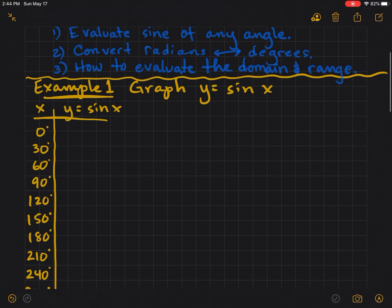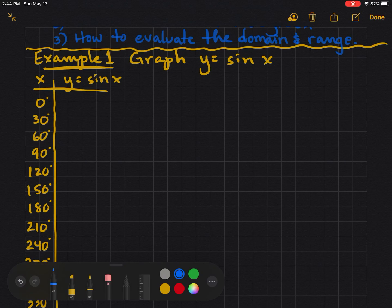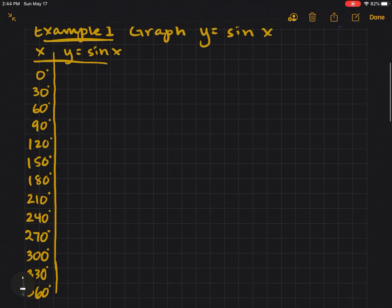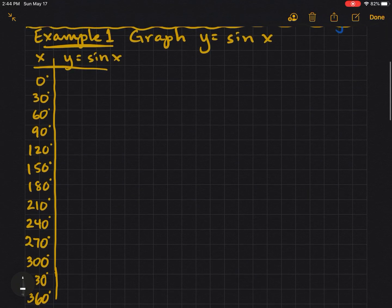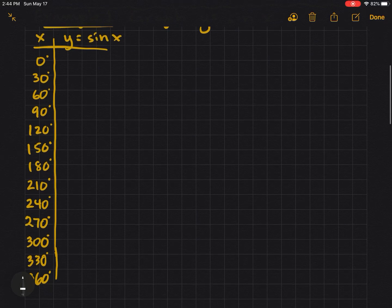We're going to start with example one. We're going to graph y equals the sine of x. So what we're going to do first of all is I've pre-selected some values of x, and I just thought it'd be nice if we just count by 30s all the way around the circle from 0 to 360.